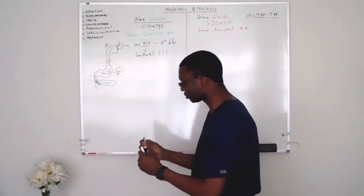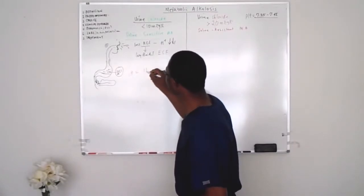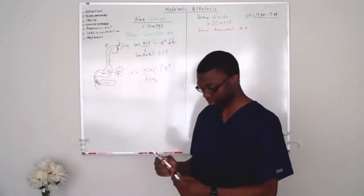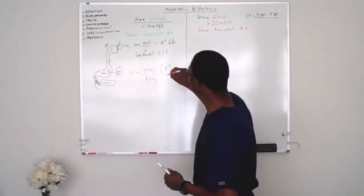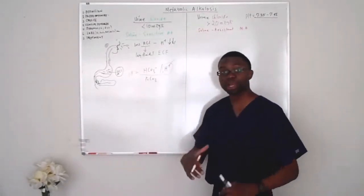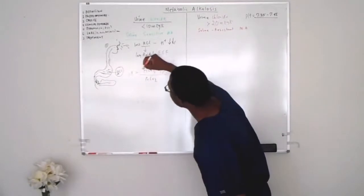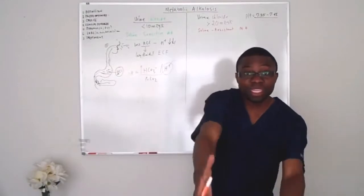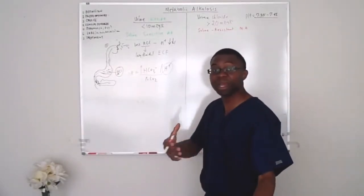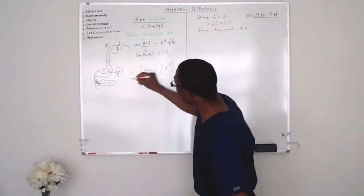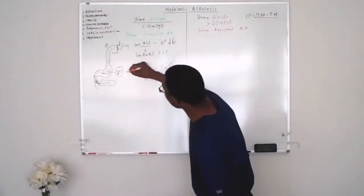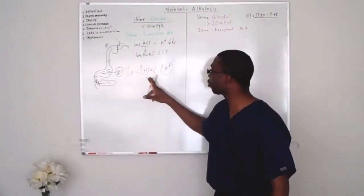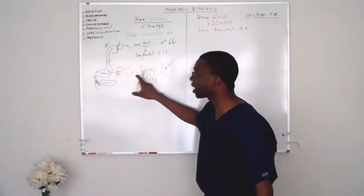Back to the formula: pH = bicarbonate / (hydrogen ions / PaCO2). We lost hydrogen chloride from vomiting, and we retained so much bicarb because there's no signal inside the duodenum for the pancreas to release bicarb into the duodenum — so it stays in the plasma. Automatically, if bicarb starts to go up, the pH goes up. So we develop metabolic alkalosis.